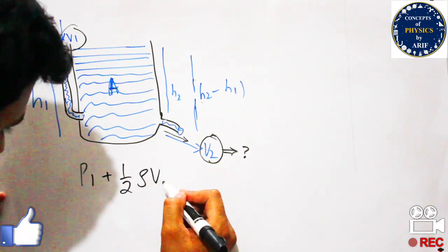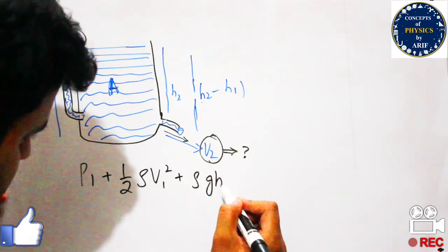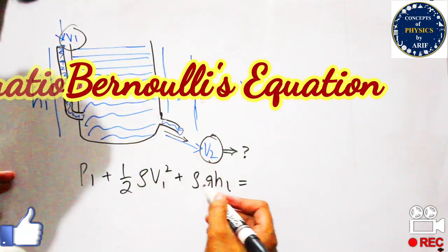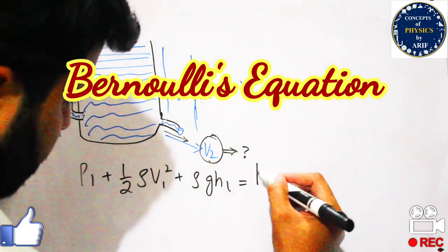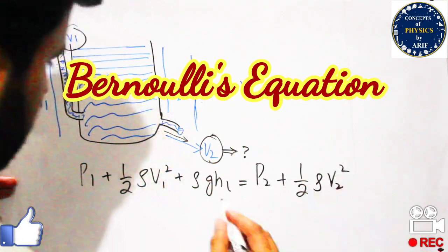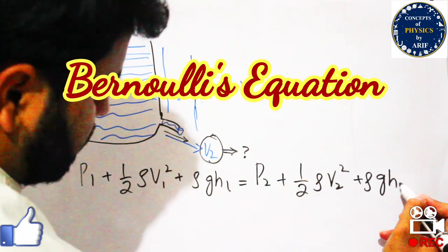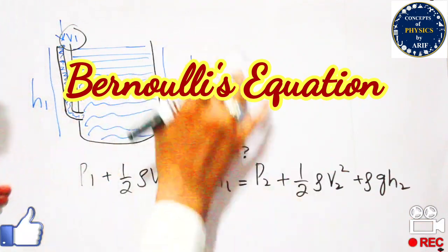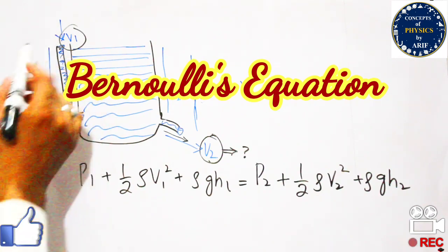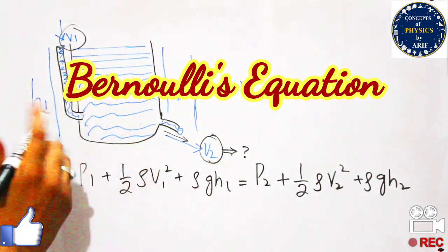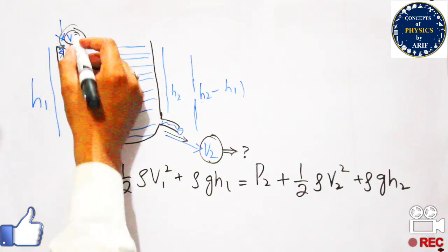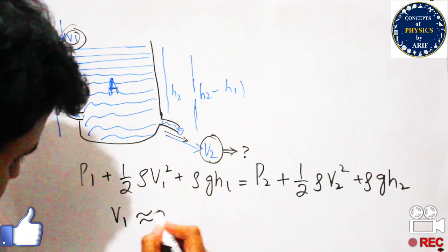First, we write the Bernoulli equation: p1 plus one-half rho v1 squared plus rho g h1 equals p2 plus one-half rho v2 squared plus rho g h2. This first expression is for region 1 and the second for region 2. Since the first nozzle has a very small narrow opening, the fluid moves very slowly there, so v1 is nearly equal to zero.